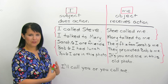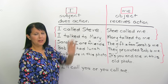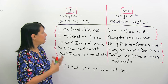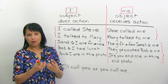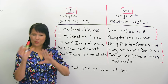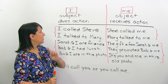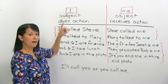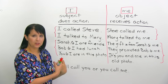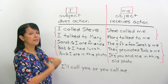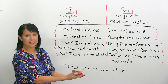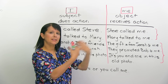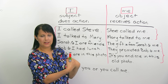Here we go. First of all, both I and me are pronouns. The pronoun basically takes the place of a noun. The most important thing that you have to remember here is that I is used as the subject of a sentence — it does the action in a sentence. And me is an object — it receives the action of the sentence.